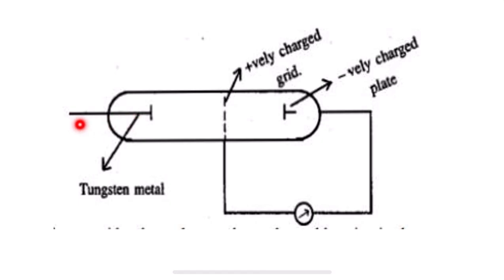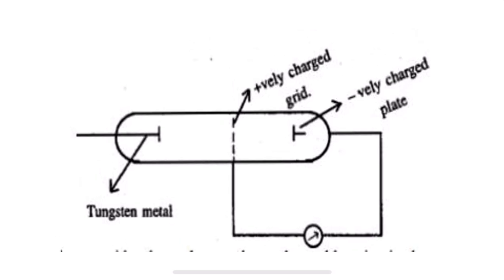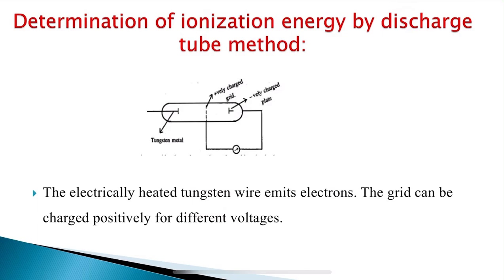When the tungsten wire is heated, electrons are emitted and accelerate towards the positively charged grid. The electrons pass through the grid and ionize atoms present between the grid and the plate. The electrons ejected by each atom are attracted towards the plate, and thus a current passes between the grid and the plate, which is shown up by the ammeter. The ammeter measures the current which passes between grid and plate — this is how we perform the experiment to determine ionization energy by the discharge tube method.